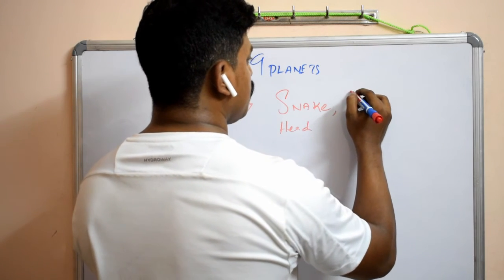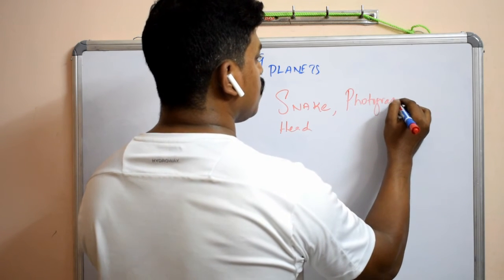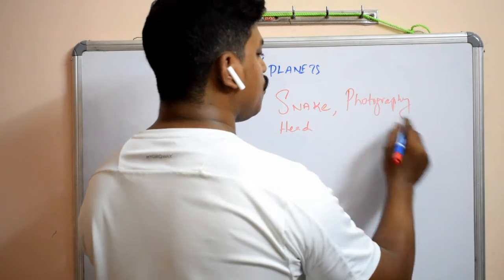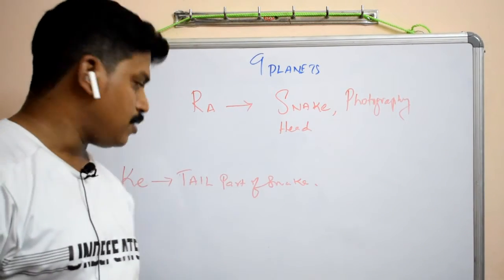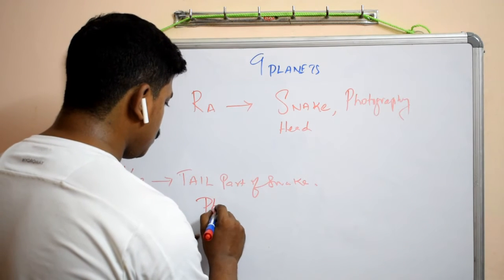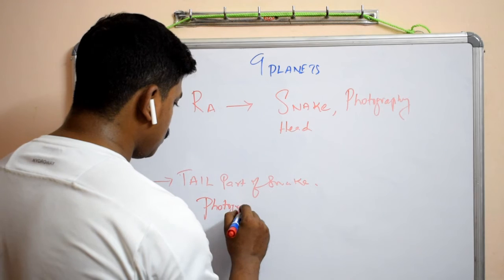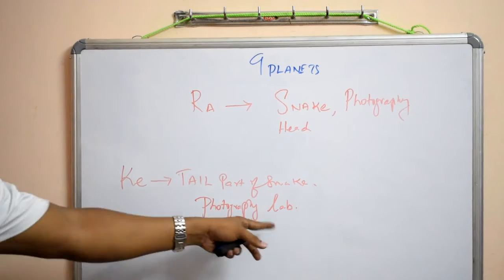Rahu comes for photography. All photography comes under Rahu. Photographic lab comes under Rahu. Photographic lab comes under Ketu, lab. Why? Because it involves chemical.